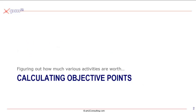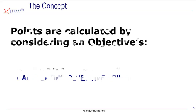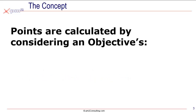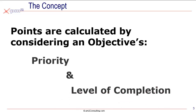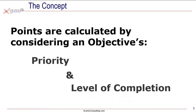Let's first talk about how it is we calculate what points are available to the team. Conceptually, the activities you do should earn points based on two things: the priority of the work that you're doing and the level of completion you achieve within the game.